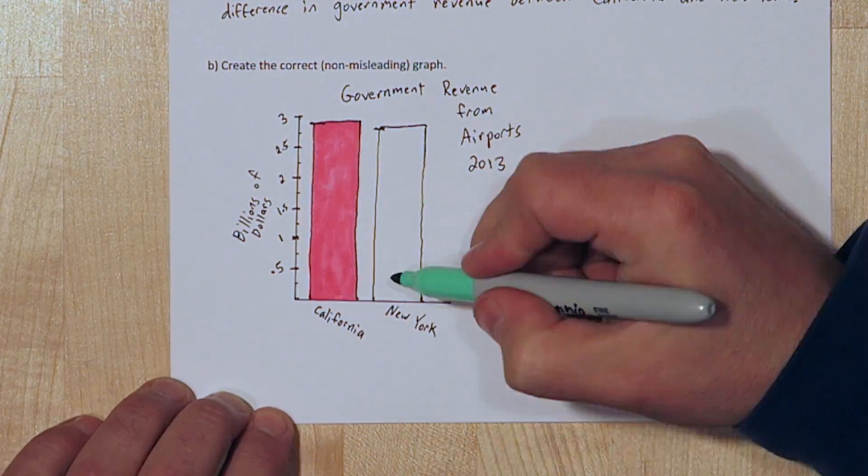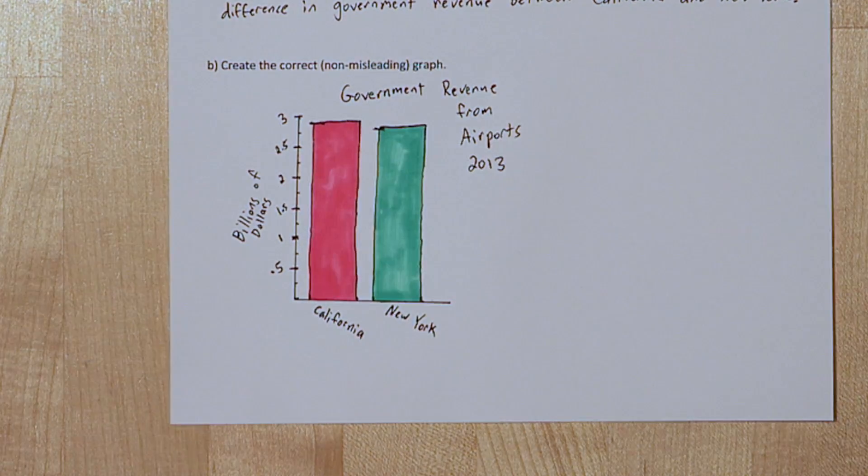With the correct graph, you can see there's not much of a difference between the California and New York revenue.